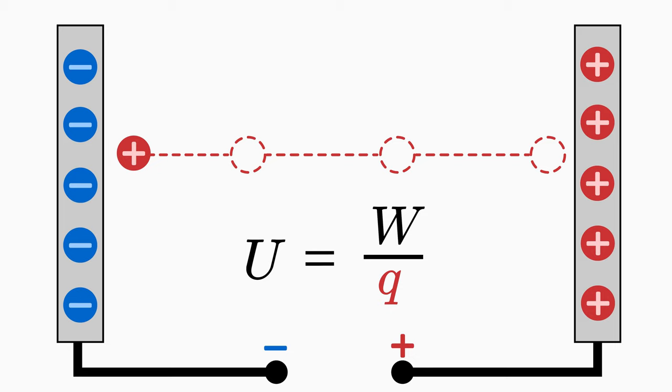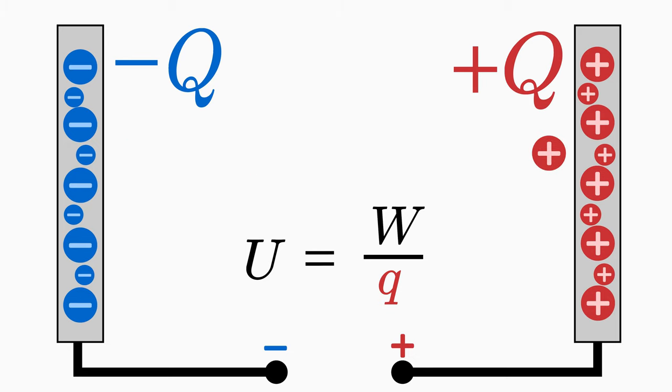You can influence the voltage between the plates and thus also the energy gained from the test charge by charging the plates even more, that is increasing the charge on both plates. Then the electric force on the test charge will increase. The test charge would then accelerate even more and thus achieve a greater speed at the end, so gain a greater energy.